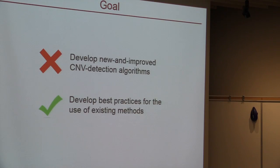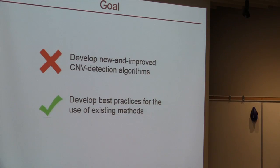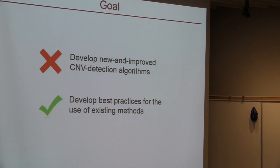Our goal is not to develop a new improved CNV detection method — there are already 50 methods, and we didn't think it made sense to develop a 51st that's probably no better than the best of those. Rather, our goal is to develop best practices for the use of existing methods, including choosing the most accurate algorithm, as well as best practices for other pipeline stages such as DNA library preparation, sequencing depth, and filtering for repetitive or low-complexity genomic regions.